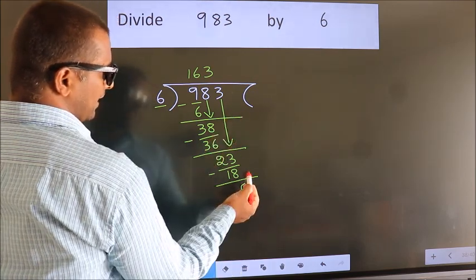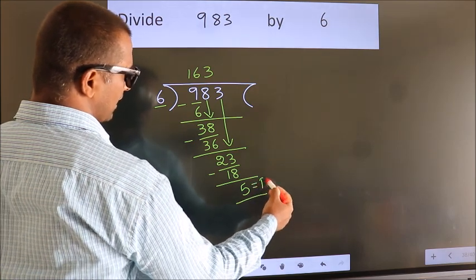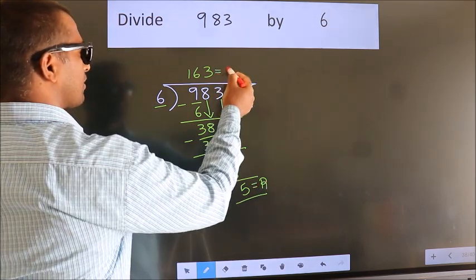No more numbers to bring down, so we stop here. This is our remainder, and this is our quotient, 163. Thank you.